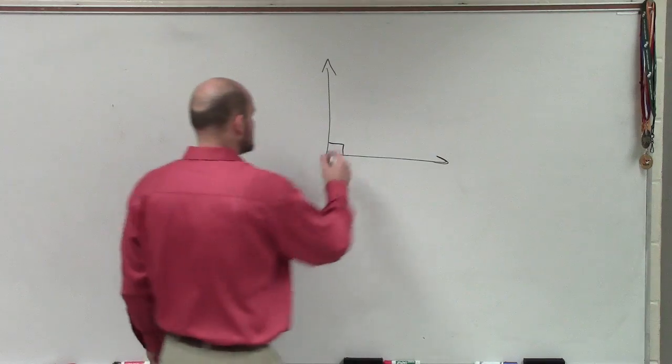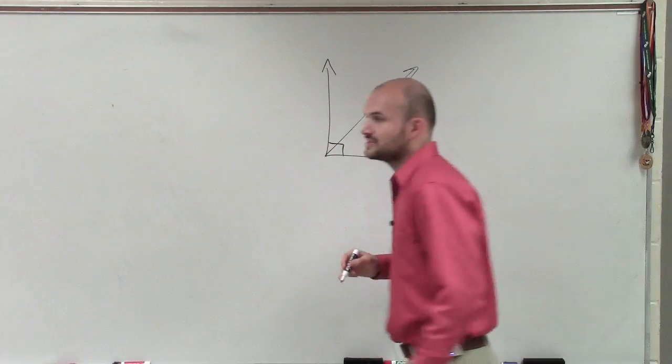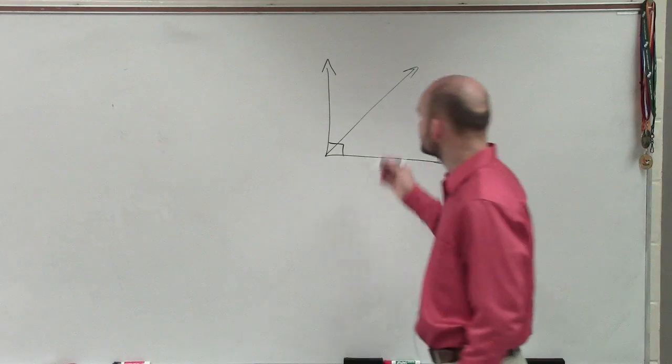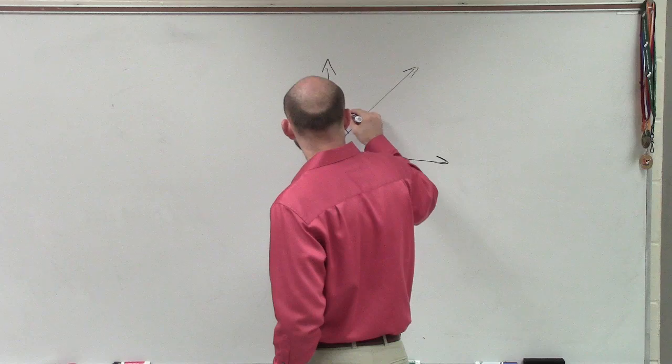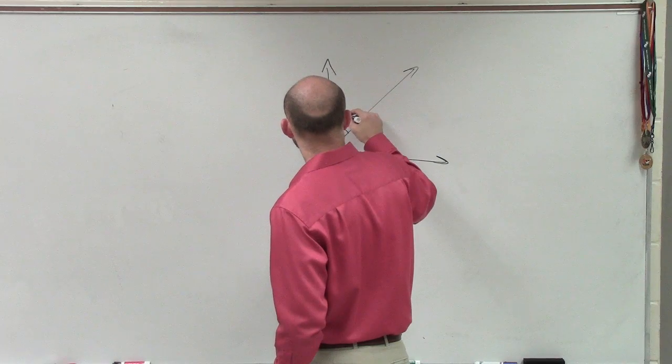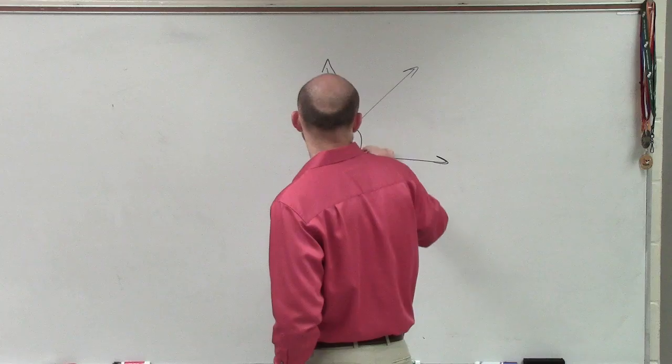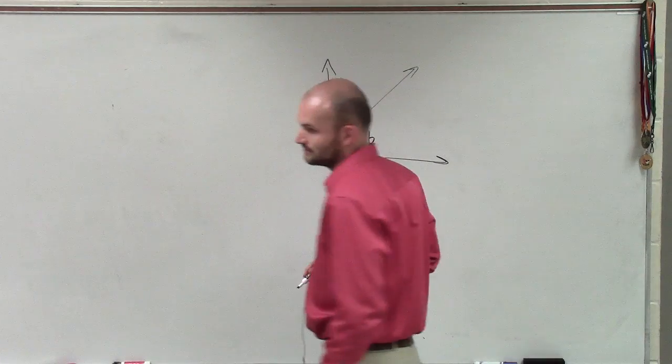And we don't really need to be concerned about what their exact measure. All we need to do is, let's go ahead and label them. And let's just call one angle, let's call this A, and let's call this angle B.